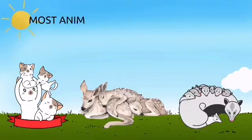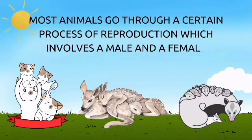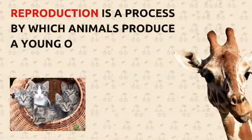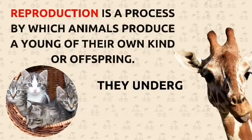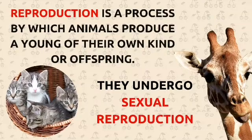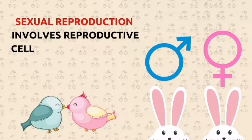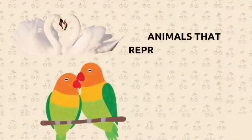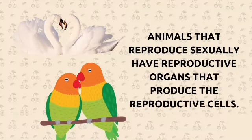Most animals go through a certain process of reproduction, which involves a male and a female. Reproduction is a process by which animals produce a young of their own kind or offspring. They undergo sexual reproduction. Sexual reproduction involves reproductive cells or sex cells from two parents, male and female. Animals that reproduce sexually have reproductive organs that produce the reproductive cells.